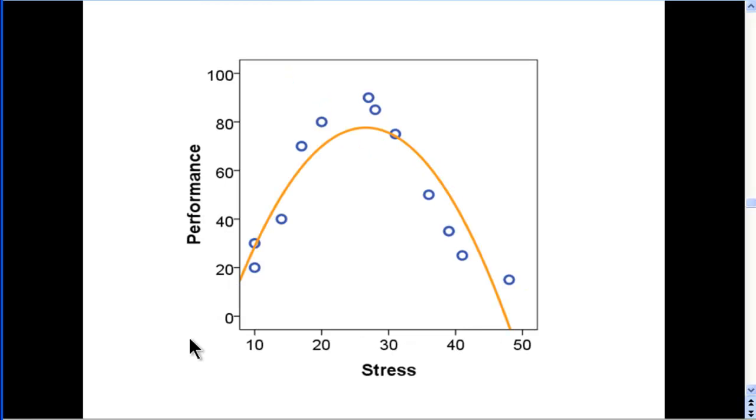Now here's an example of a nonlinear effect or a nonlinear regression line, specifically a quadratic function. In this case, it's stress on the x-axis and performance at a task. There's research in psychology that shows if your stress levels are really low, you won't perform very well on a task.